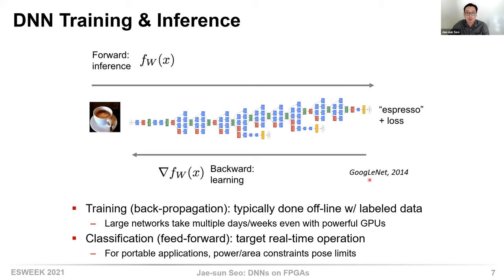There's an important distinction between DNN training and inference. Using GoogLeNet as an example of image classification — we want the machine to classify an image as 'espresso.' Training is typically done once or occasionally, offline with high-end GPUs. It requires a lot of labeled data: images from the training set are passed through the network, and if the inference is incorrect, the loss is back-propagated to optimize all the weights.